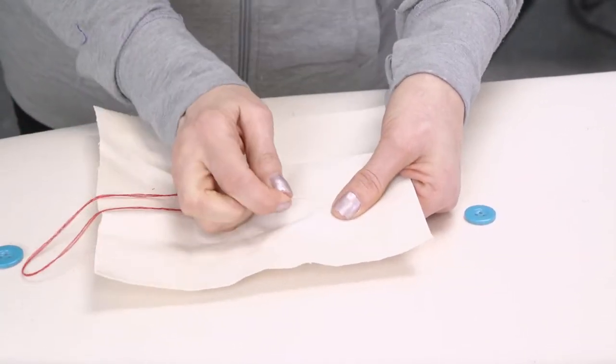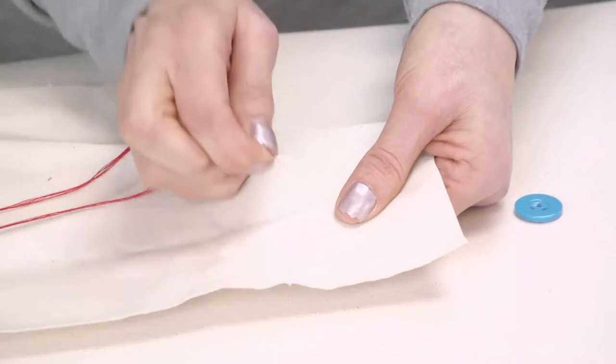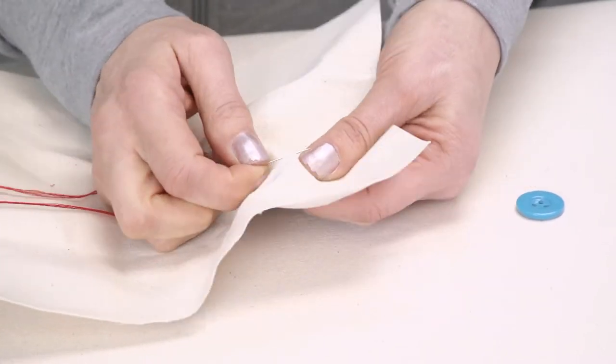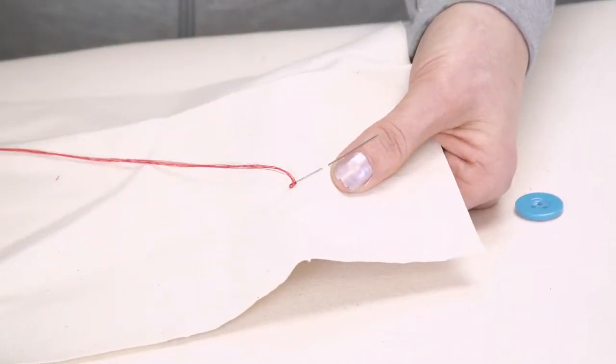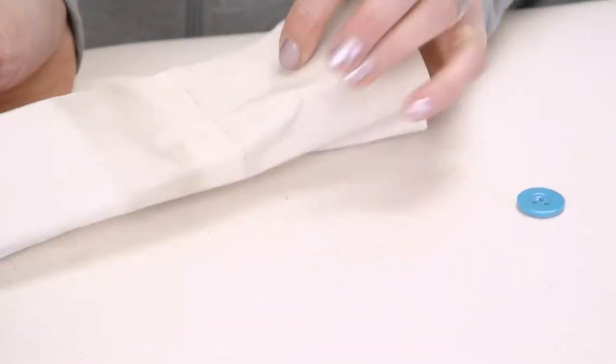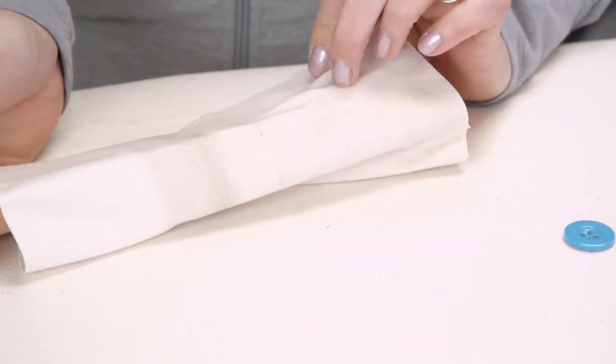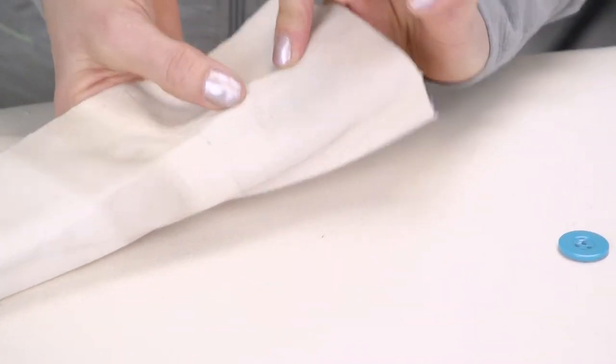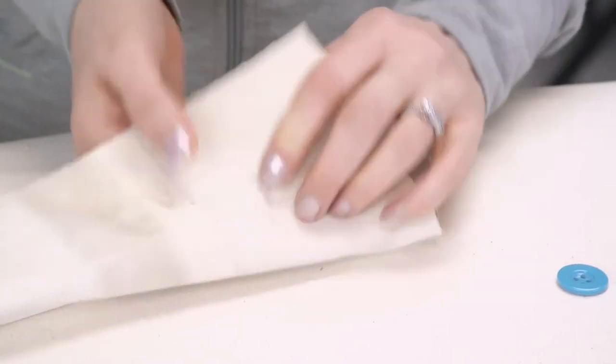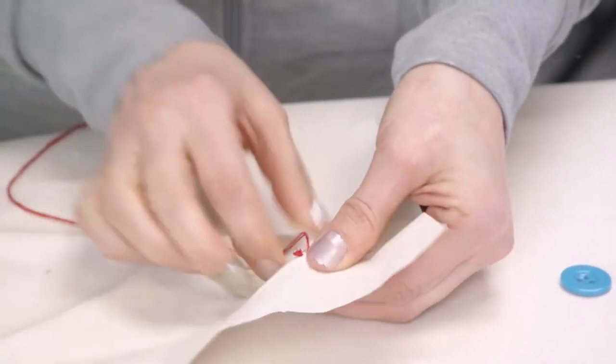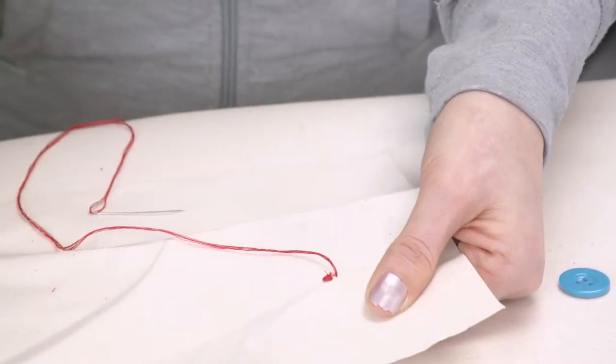I always like to hide my knot. So even though this is the good side of the material, if I can hide my knot underneath the button, then it's not even going to show as much on the reverse side. So you can see how with my needle I've just pricked a little bit of the material. My knot now will be underneath my button.